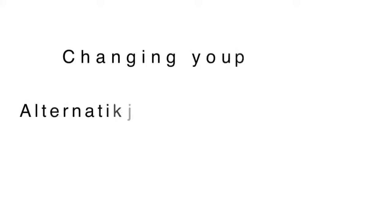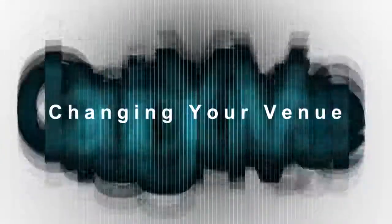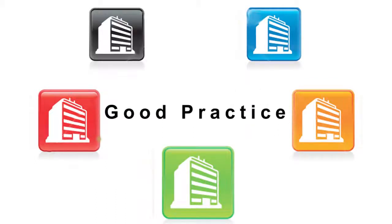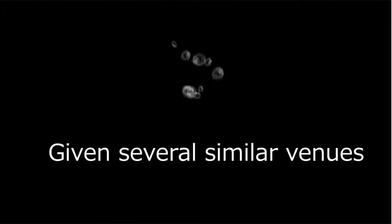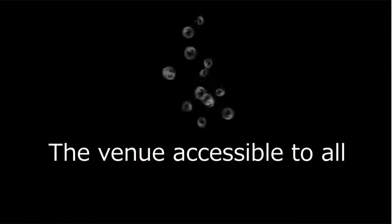This could involve changing your venue, agreeing on alternative learning opportunities for affected students, or modifying your activities. Regarding changing your venue, if an off-campus element is unnecessarily inaccessible, it is good practice to choose an alternative off-campus element that is accessible to all. For example, if you have the choice of a variety of similar venues for the same learning opportunity, it is good practice to choose the venue that is accessible to all students.